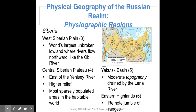The West Siberian Plain is the largest unbroken lowland, with rivers flowing northward like the Ob River. The Central Siberian Plateau lies east of the Yenisei River. It has higher relief and is sparsely populated because most of it is very difficult to live in.